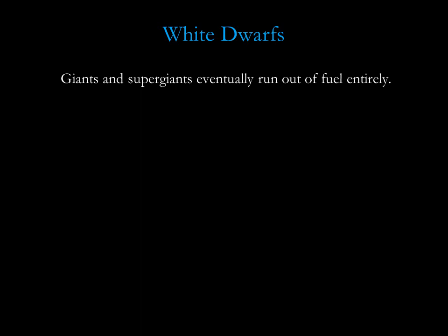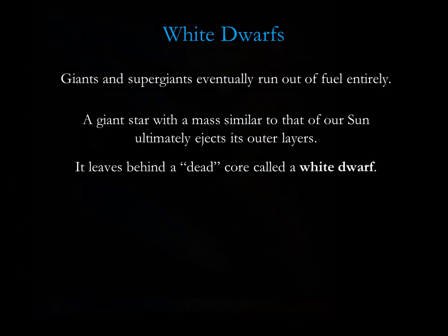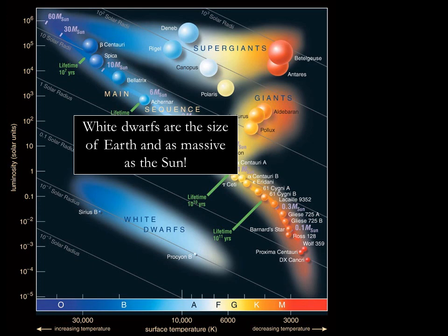Giants and supergiants eventually run out of fuel entirely. A giant star with a mass similar to that of our sun ultimately ejects its outer layers, leaving behind a dead core in which all nuclear fusion has ceased. White dwarfs are these remaining embers of former giant stars. A typical white dwarf is no larger in size than Earth, but has a mass similar to that of our sun. Procyon B is one such example.